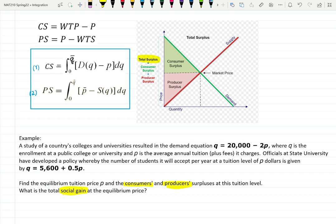Example: a study of the country's colleges and universities resulted in a demand equation D of Q, which we need to rewrite so it looks like P equals something. Q is the enrollment at the public college or university and P is the average annual tuition charged. Officials at the university developed a policy where the number of students accepted per year at a tuition level of P dollars is given by a supply equation, which we also need to rewrite as P equals something.